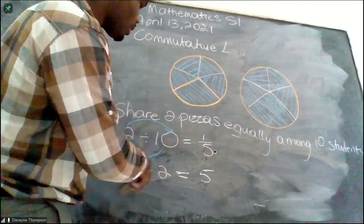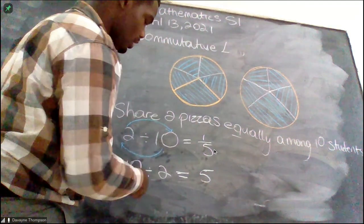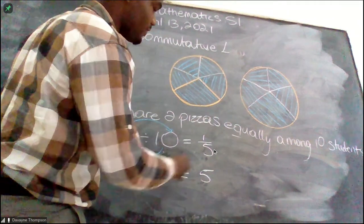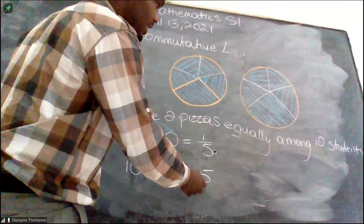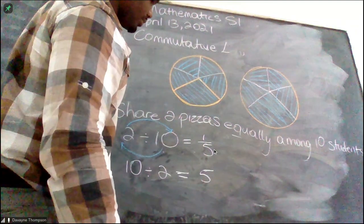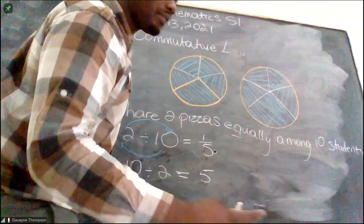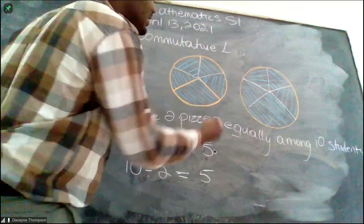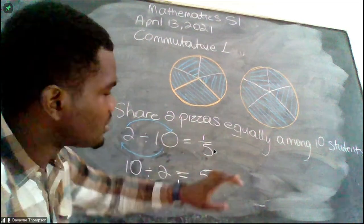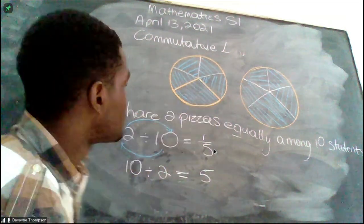Now let's quickly write ten divided by two. We're trying to see if commutative works, so we swap it around. We say ten divided by two. Instead of each person getting one-fifth of a pizza, we're saying each person gets five pizzas itself. That's a little correction, it should not be five slices, but rather five pizzas itself.